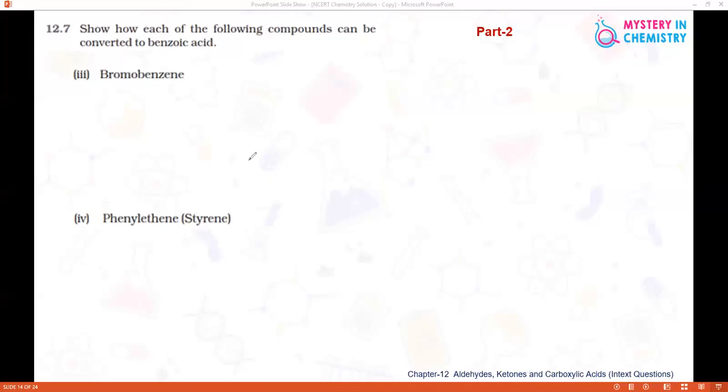Third one is bromobenzene - how it can be converted to benzoic acid. For this we are using Grignard reagent because by that we can introduce one more carbon atom in the benzene and by that we can get the benzoic acid. So just recall the reaction and start writing.